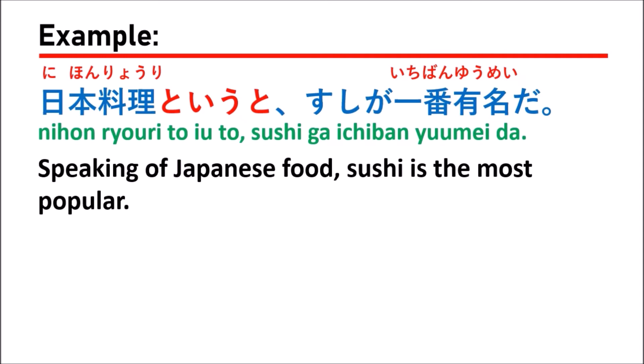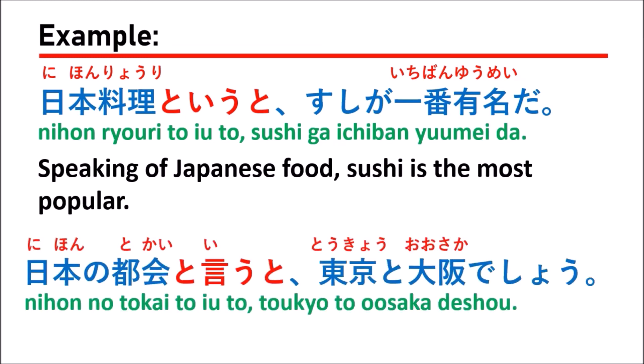The next sentence means: when we talk about Japanese food — 「日本料理と言うと」(nihon ryori to yuto) — we take the most famous example, and they say 「寿司が一番有名だ」(sushi ga ichiban yumeida), meaning sushi is the most popular. So we're talking about the topic of Japanese food, and many people imagine sushi because sushi is a very popular Japanese food.